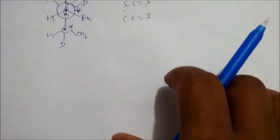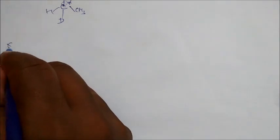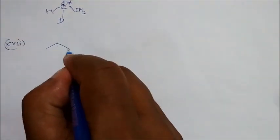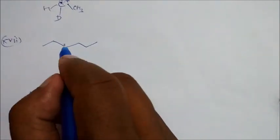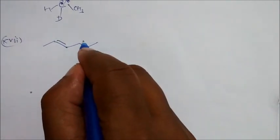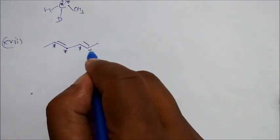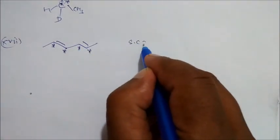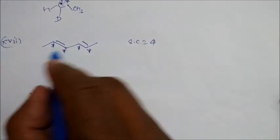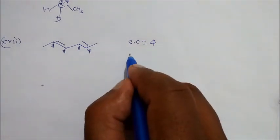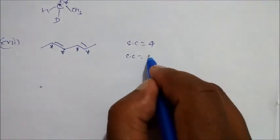Let us take another example. Suppose here is a double bond and here is a double bond. Now it is very clear — double bond is there. Is this a stereocenter? Yes. Is this a stereocenter? Again yes. Is this a stereocenter? Again yes. Is this a stereocenter? Again yes. So we can say stereocenters is four. And now chiral centers — when there are two alternating double bonds present, there are no chiral centers. In this case it is zero.